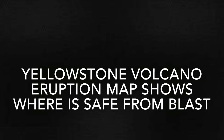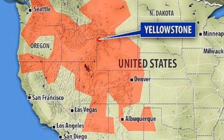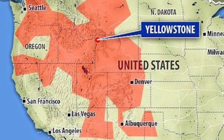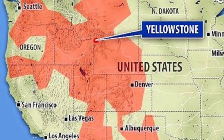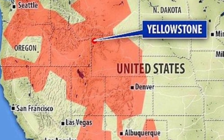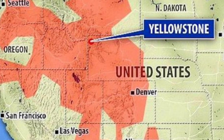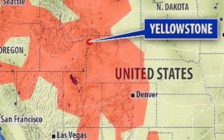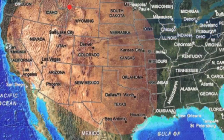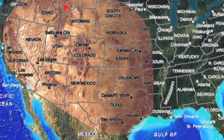Here is some update information on Yellowstone volcano. An eruption map shows nowhere is safe from a volcanic blast. Yellowstone volcano will spare no one the horror of eruption when it blankets the United States in ash from coast to coast.